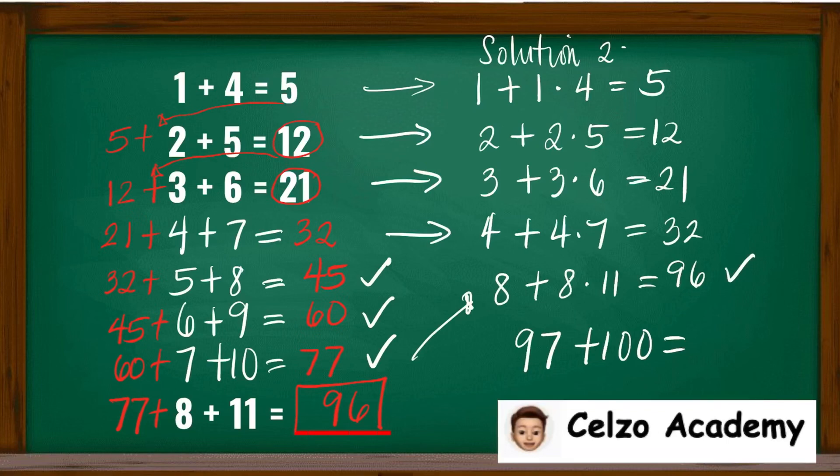So if you're asked to find the value of 97 plus 100, this means that you need to do 97 plus 97 times 100. And 97 times 100 is 9,700 plus 97 is 9,797.